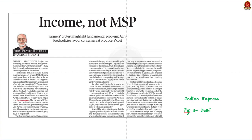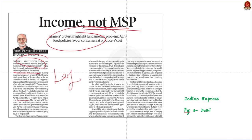Look at this article — it talks about the recent farmer protest and the issues about MSP. As we all know, farmers from Punjab are protesting near the borders of Delhi. The government should address their concerns, understand their demands, and engage in discussions promptly. The first key demand of farmers is making Minimum Support Price (MSP) legally binding. The second is setting MSP based on MS Swaminathan's formula, which suggests a 50% profit over comprehensive cost, that is Cost C2.